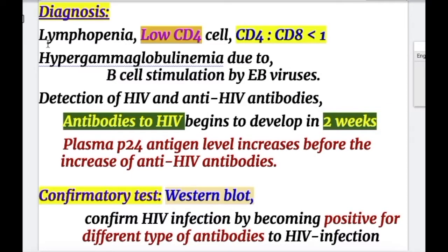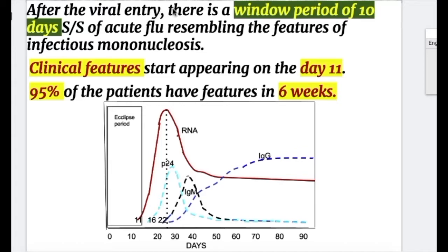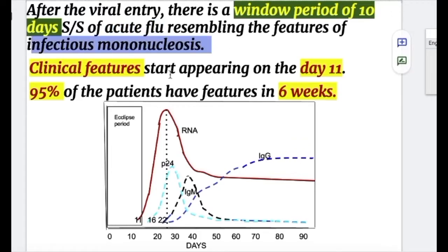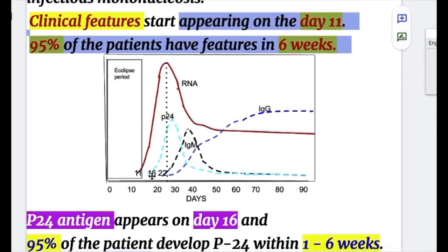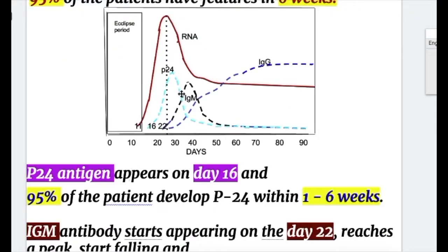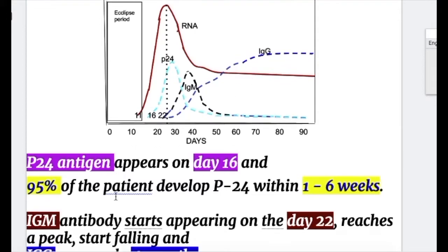Diagnosis of HIV infection or AIDS. After viral entry, there is a window period of 10 days, with signs and symptoms resembling infectious mononucleosis. Clinical features start appearing on day 11, then antigen P24 appears on day 16. Immunoglobulins — first IgM starts appearing on day 22, then IgG rises and maintains a peak at 3 months.